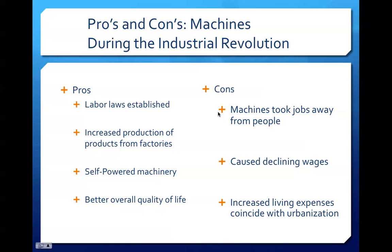Finally, we would have seen a better quality of life overall for the people living at the time. Although there were these positives, it should be noted that these machines brought negative aspects as well. Machines took away jobs such as sewing and weaving from hard-working individuals. Furthermore, increased production from machines would have led to declining wages of workers, and as a result of the urbanization that came with the machines of the Industrial Revolution, increased living expenses would have also plagued the people.